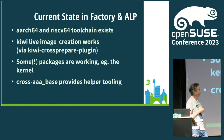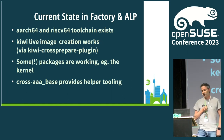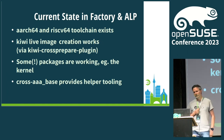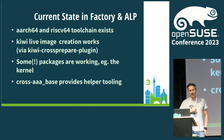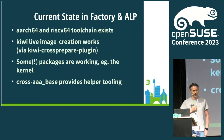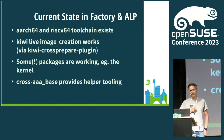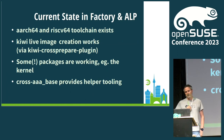Currently what we have in our code stream in Factory, ALP, and to some degree also in Leap 15, we have cross compilers and toolchains for ARM 64-bit and RISC-V. That's where we need them most at the moment.